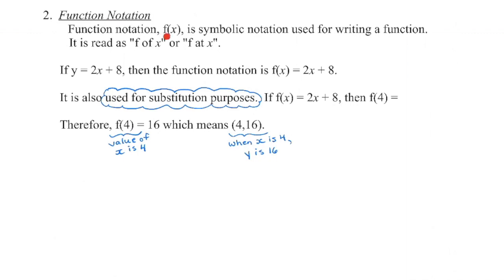This is function notation — you'll see it constantly in higher-level mathematics. It is not f times x; it's a way we read a function. We say f of x or f at x. f stands for function, but you'll see variations like g of x, f of a, or distance as a function of time. The relation y equals 2x plus 8 is a degree-1 linear function that passes the vertical line test, so in function notation we replace y with f(x): f(x) = 2x + 8.